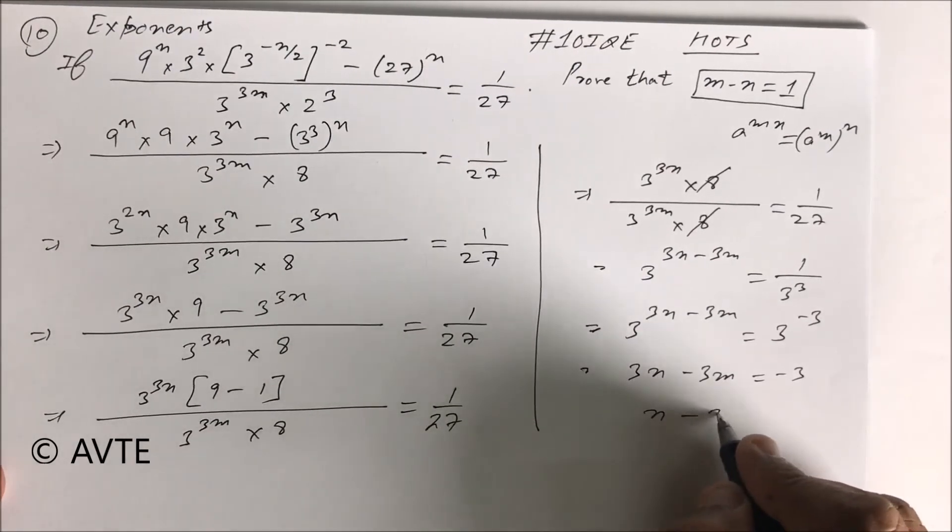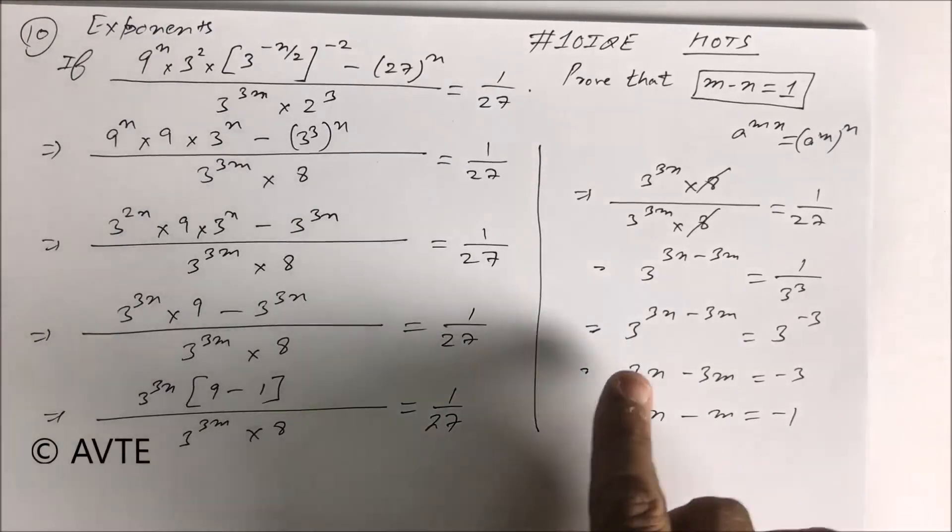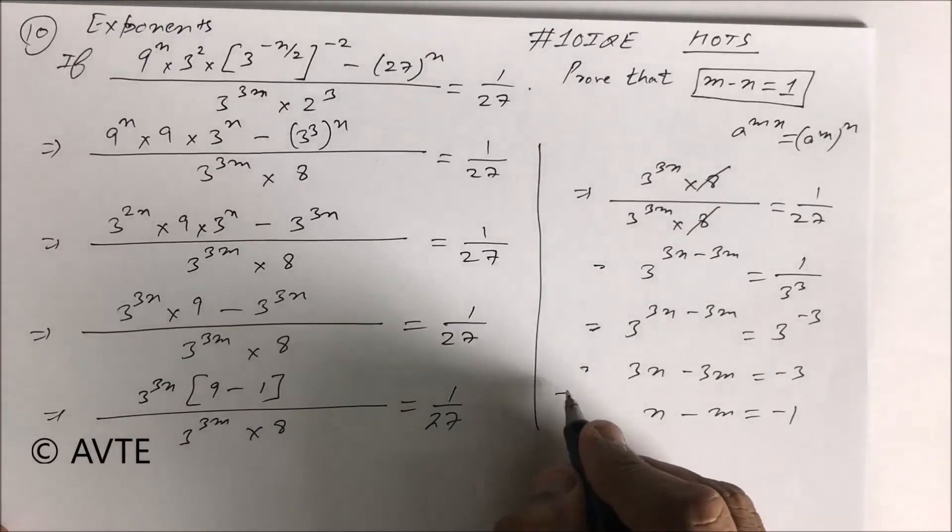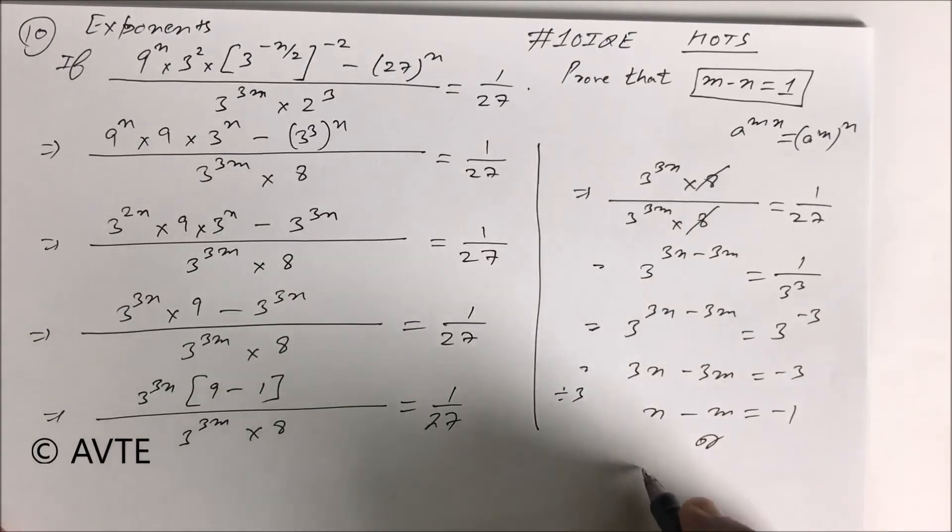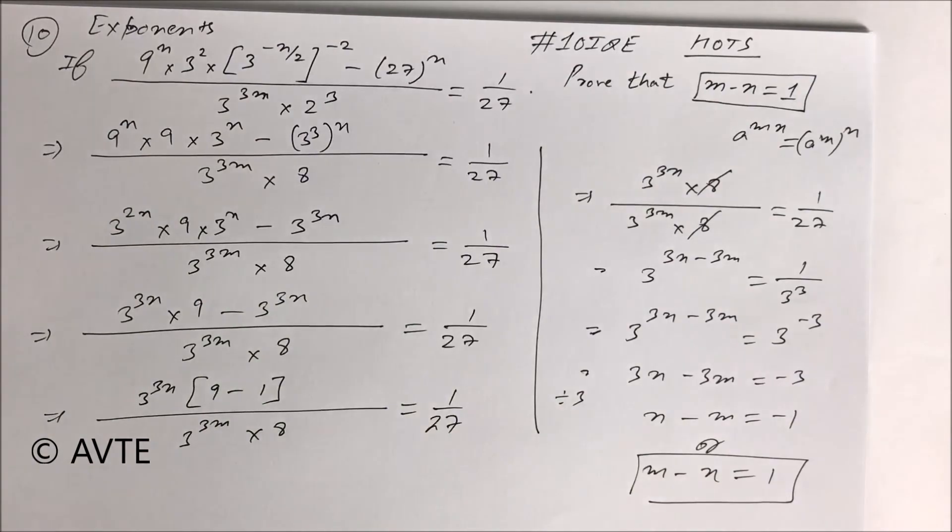It means n minus m is equal to minus 1. We divide the whole equation by 3. So you have n minus m is equal to minus 1. It means m minus n is equal to 1. Hence proved.